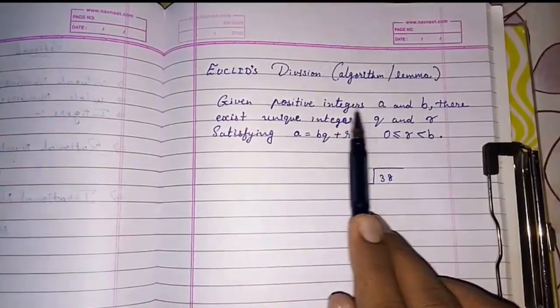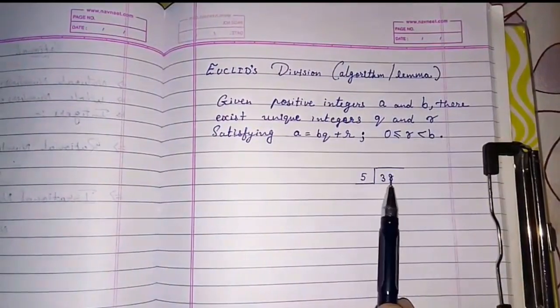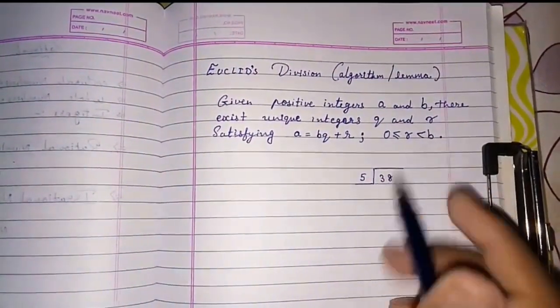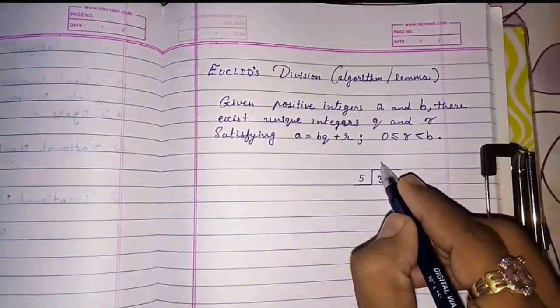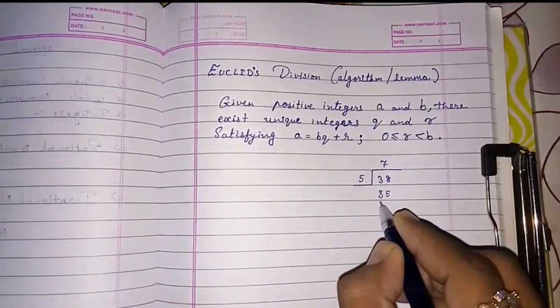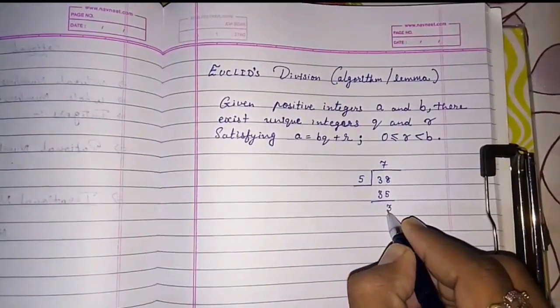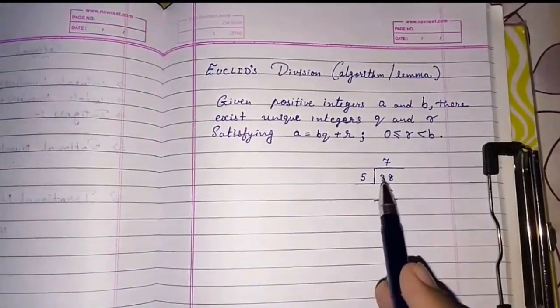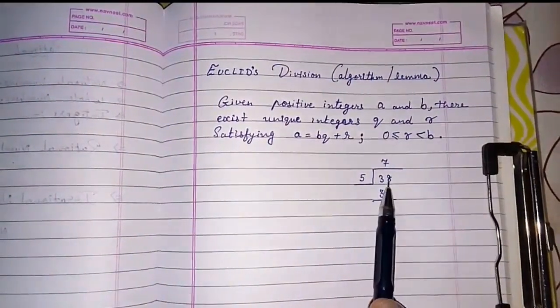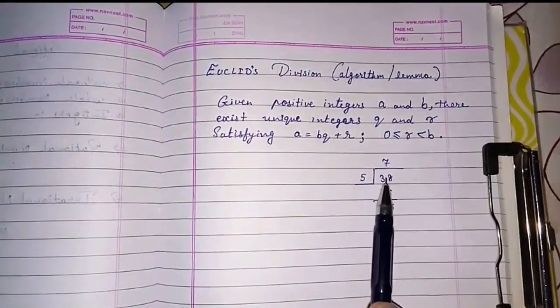Look here, they said given positive integers a and b means these are the two integers. If I divide them, I am dividing it. 5, 7 times is 35 and the remainder will be 3. So what happened? Given positive integers a and b, there are two numbers divisor and dividend. If I divide it...